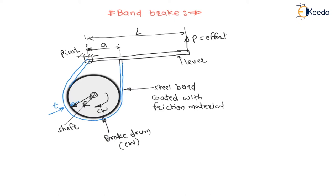Here, theta is the angle of contact of the band with respect to the brake drum — the angle of contact between band and brake drum. This is also called the lap angle or wrap angle.